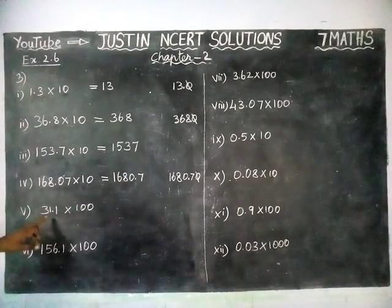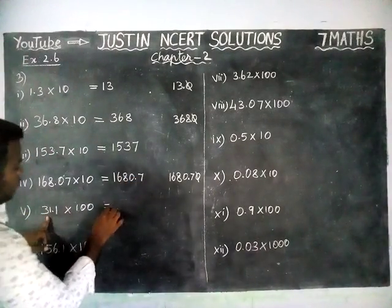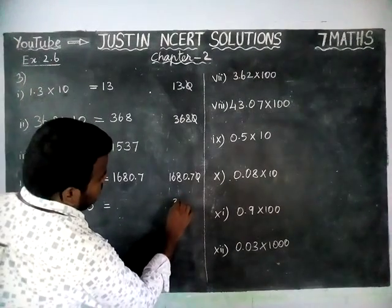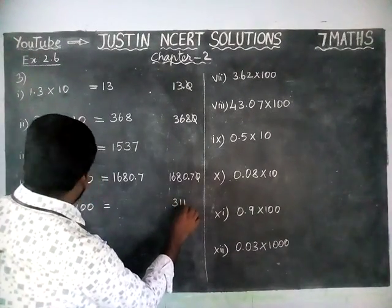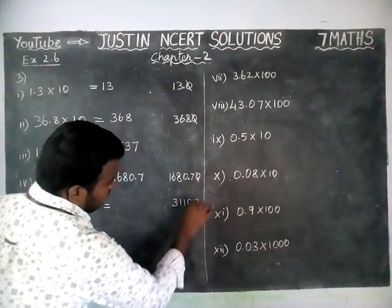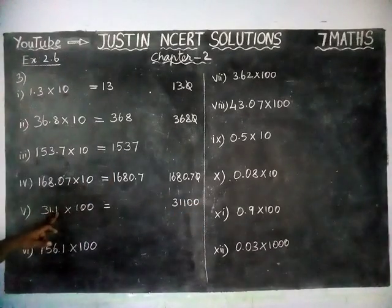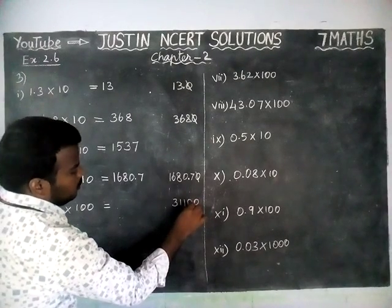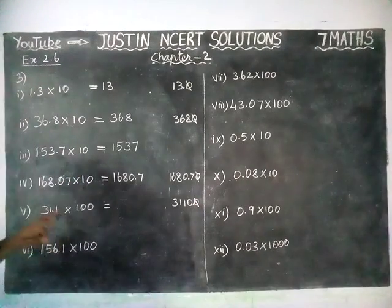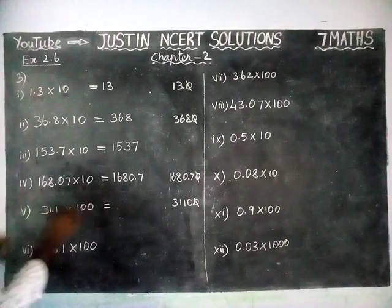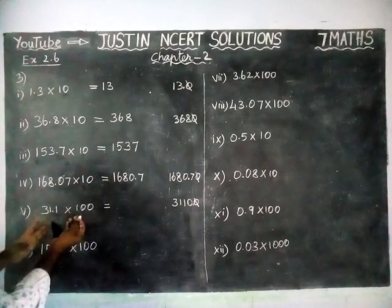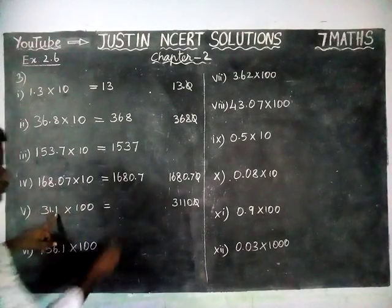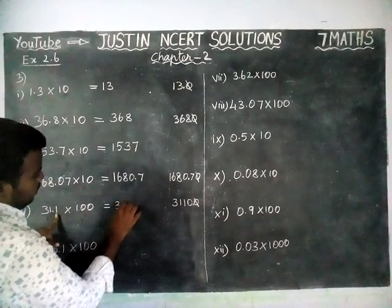Now, 31.1 into 100. We have 3, 1, 1 and two zeros. Here we have only one decimal point, so from here we are going to move right side to one decimal point — that is cancelled. When multiplying with 100, we have to move right side two steps. But here we have only one digit after moving, so we will add another one zero.